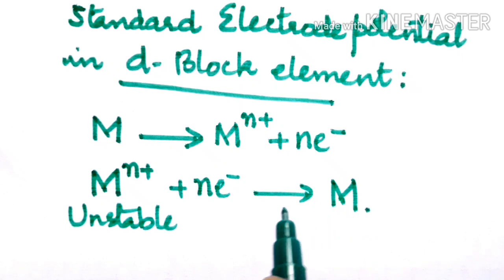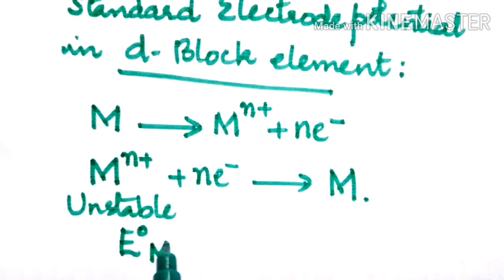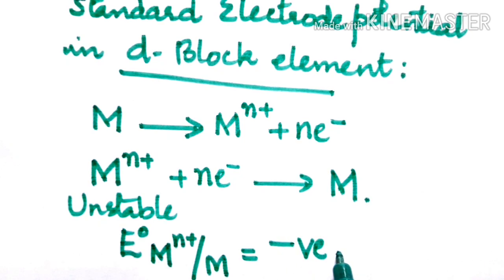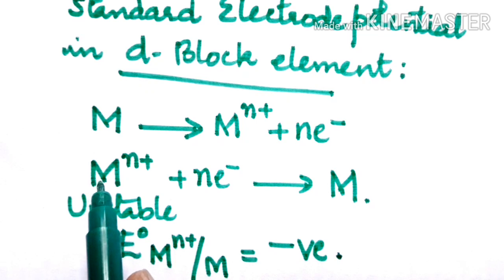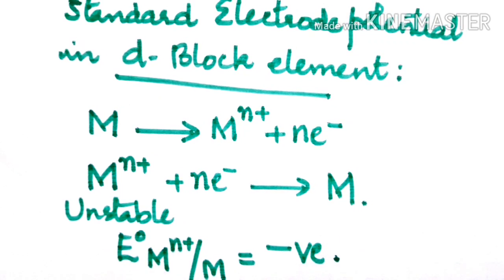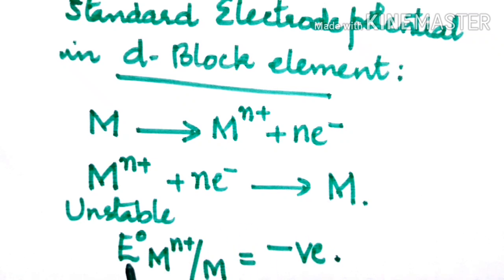When the ion becomes metal, we know all metals are electropositive. The E° values — that is, the standard reduction potential represented as E° (M^n+/M) — will be negative in most cases, because the metal ion is more stable than the metal. Greater the negative value, the greater the tendency to get oxidized, meaning the metal will act as a good reducing agent.